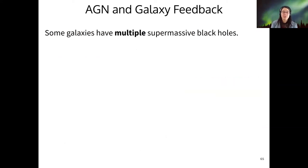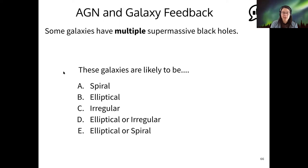Okay. Something else that's really awesome about active galactic nuclei is we've seen some galaxies that have multiple supermassive black holes in them. So based on what you now know about galaxy evolution, what sorts of galaxies do you suppose we'd find multiple black holes within? All right. So if you said B or C or D, you're correct.